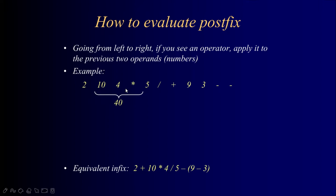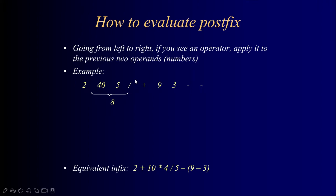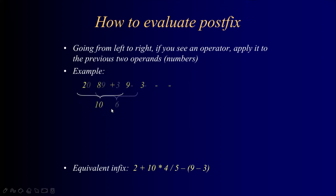Whenever we find two numbers and there is an operator, we have to apply that operator between these two numbers. For this case, we have to take 10 multiplied by 4, which gives us 40. Then we append this back into our expression. Now we have 40, and we look for the next operator, which is the division operator. We apply 40 divided by 5, which gives us 8, and we send that back to our equation.